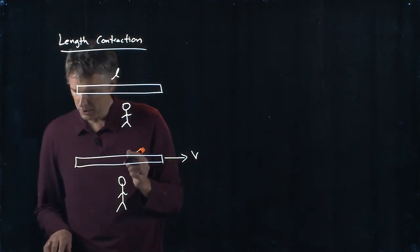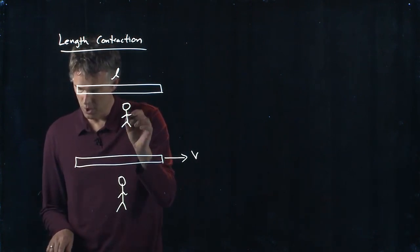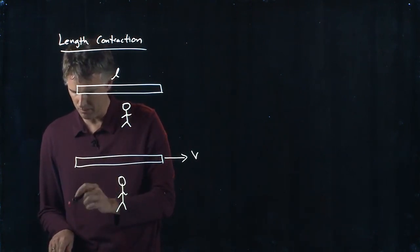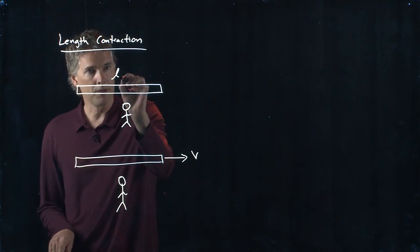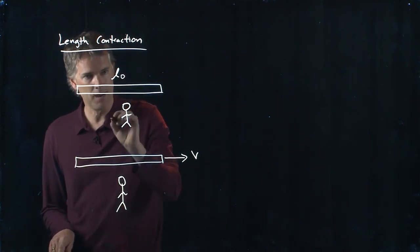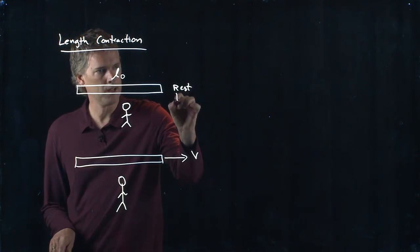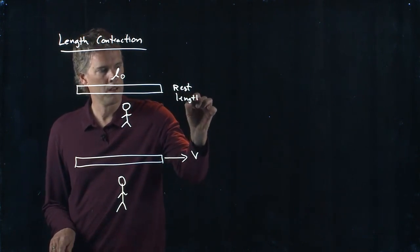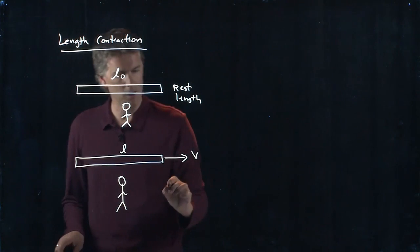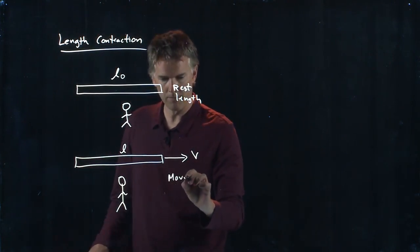Let's make sure we get the nomenclature the same as in the book. This one is L-naught, the rest length. And this one is L, the moving length.